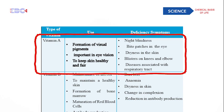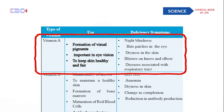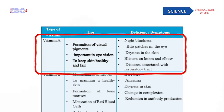The first type of vitamin is vitamin A. The uses of vitamin A are: formation of visual pigments, it is important in eye vision, and it helps to keep the skin healthy and fair. For these functions we need vitamin A. The deficiency syndromes include night blindness — meaning your vision is poor at night.